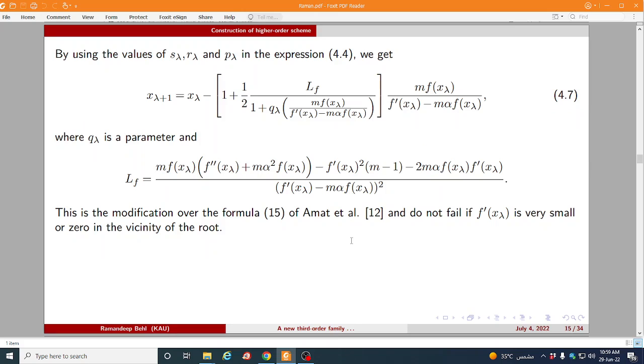If you clearly have a look alpha and m, if alpha is equal to 0 and m is equal to 1 in that case this term is a classical Newton method here. So by using the value of s(λ), r(λ), p(λ) in the expression 4.4 we can easily get this expression. So this is our newly formed schemes.